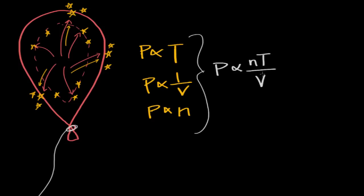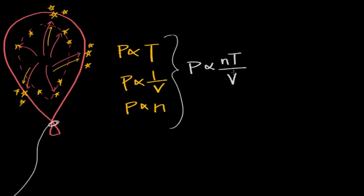And we can make this composite formula an equation if we add a constant. And we could call the constant anything, but we'll call it R. And that'll give us P is equal to R times, and that's our constant, times nT over V. And so if we multiply both sides by V and do just a little bit of rearranging, we're going to get a pretty important equation called the ideal gas equation.